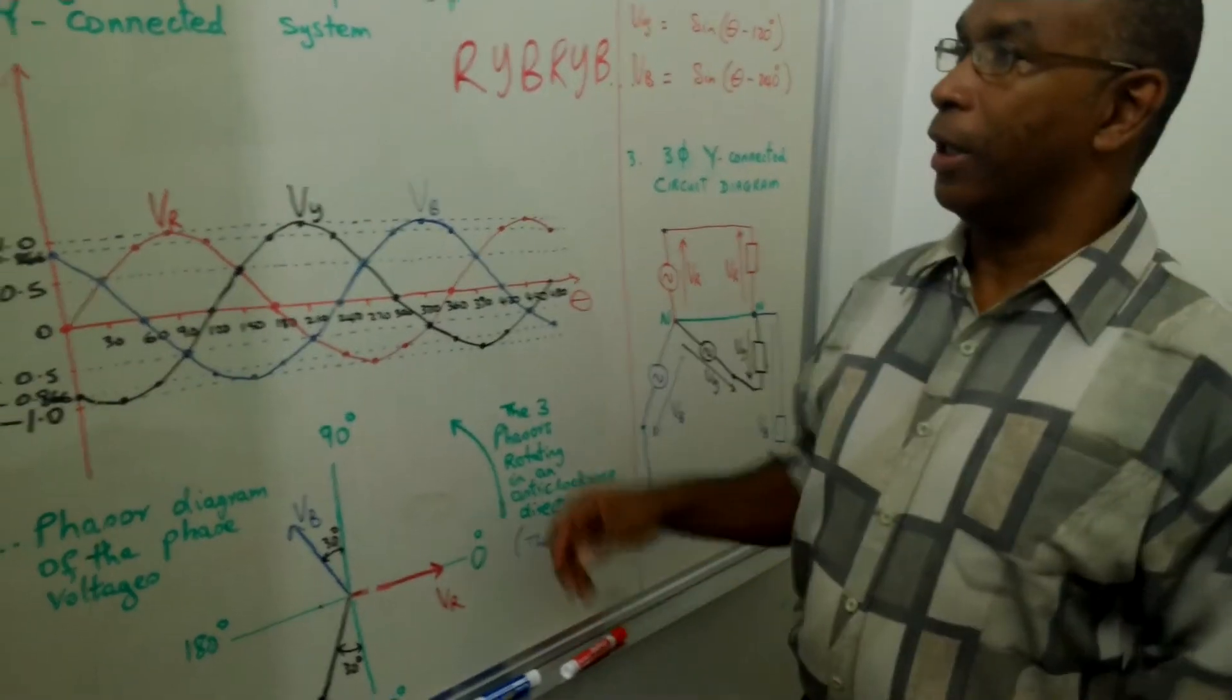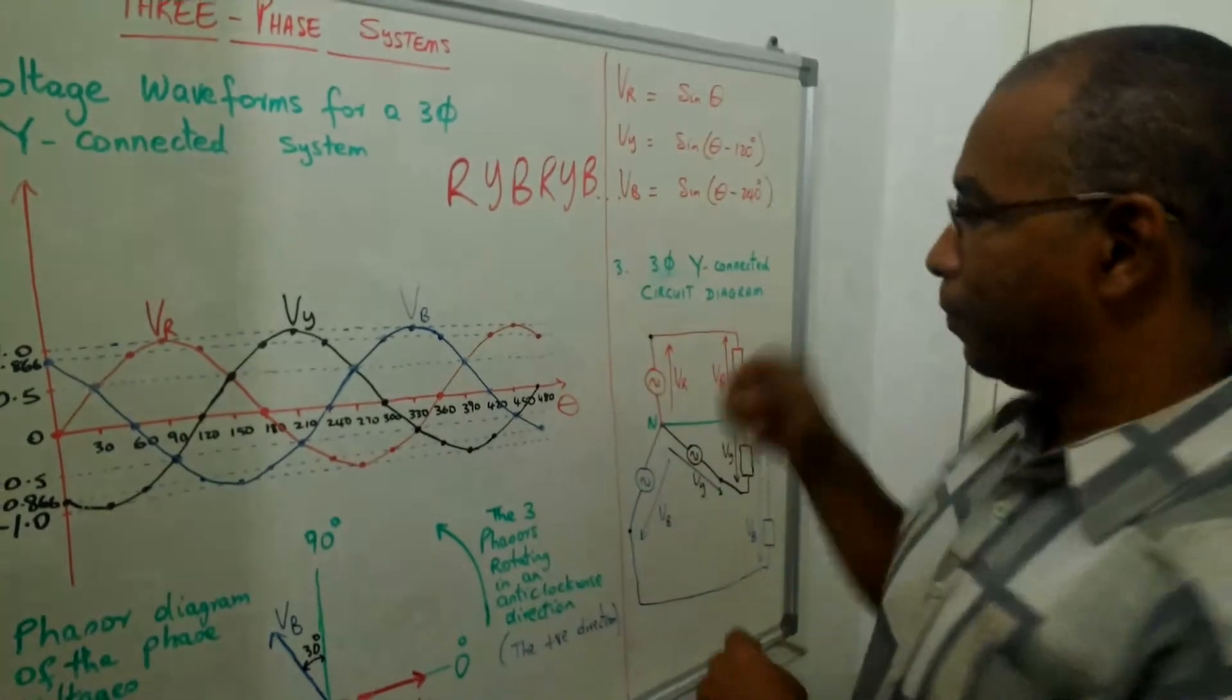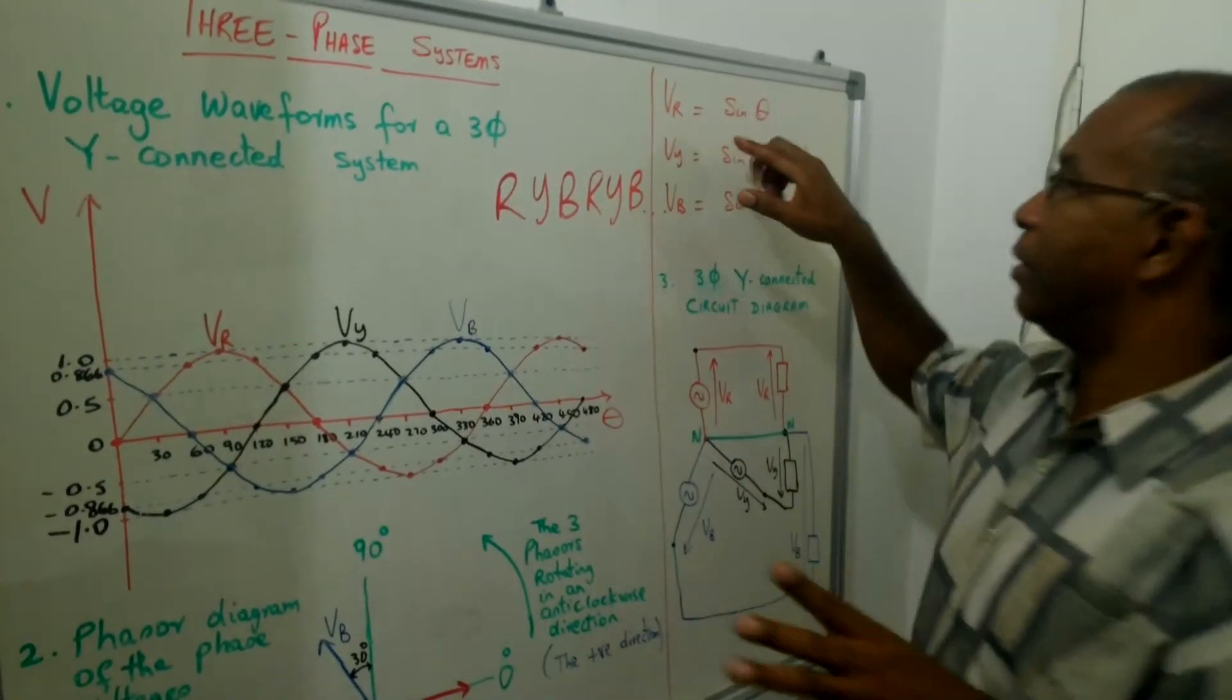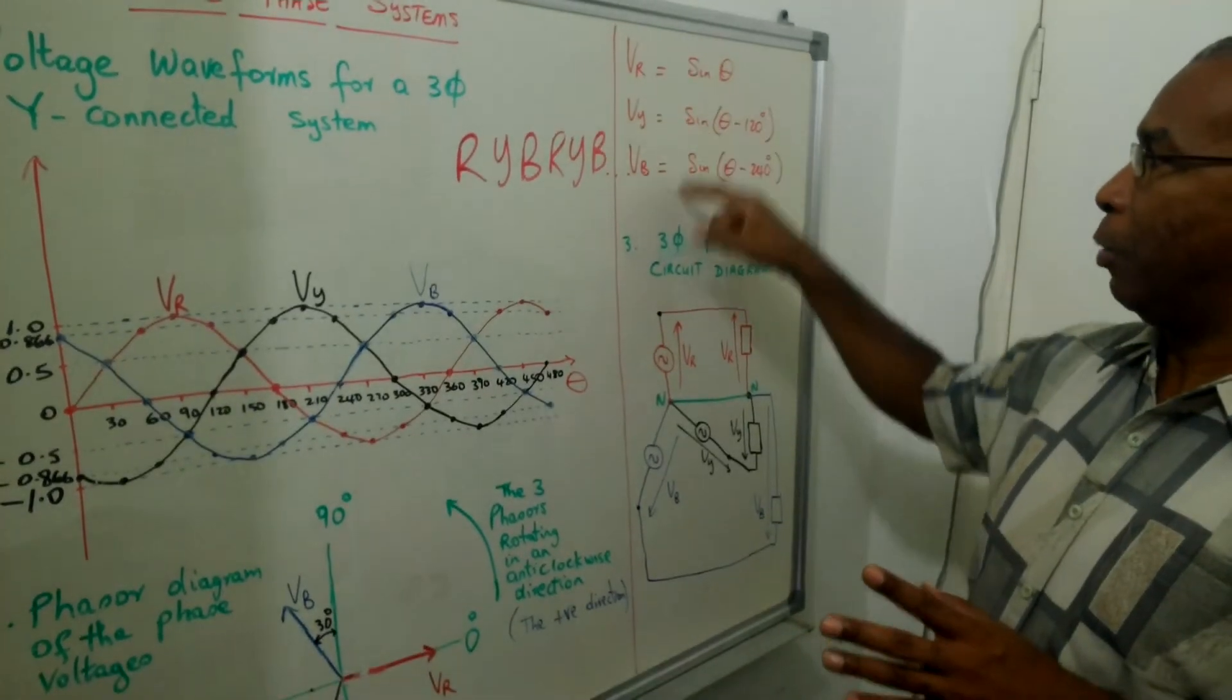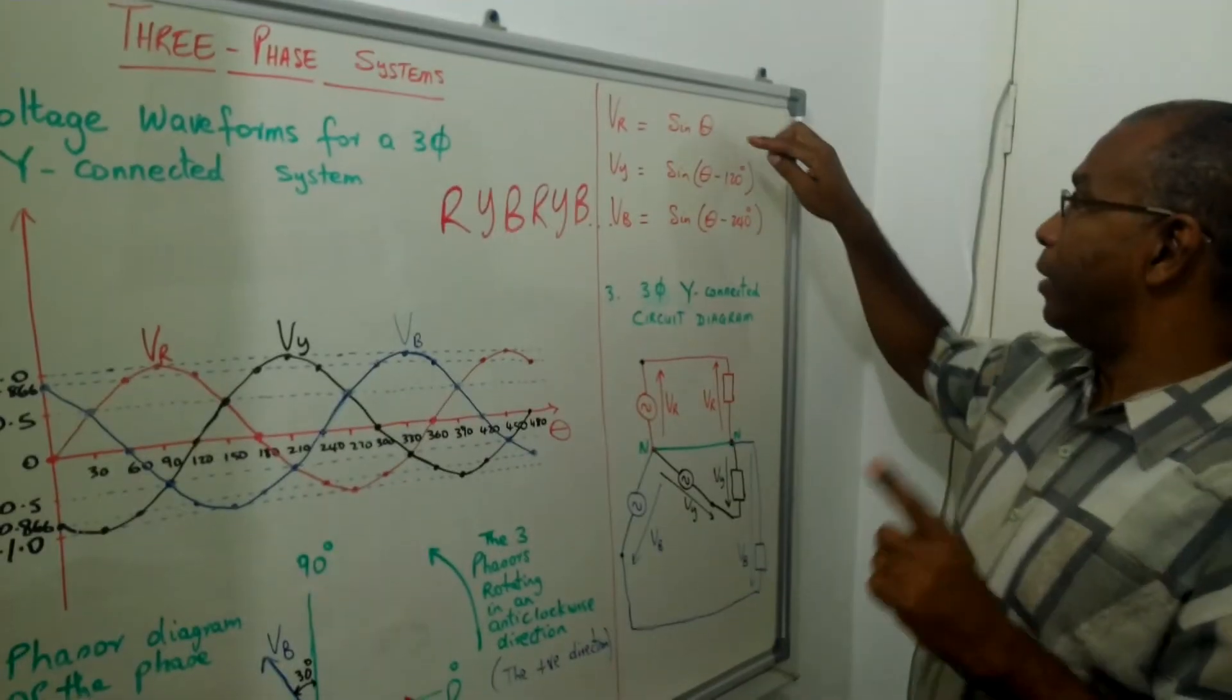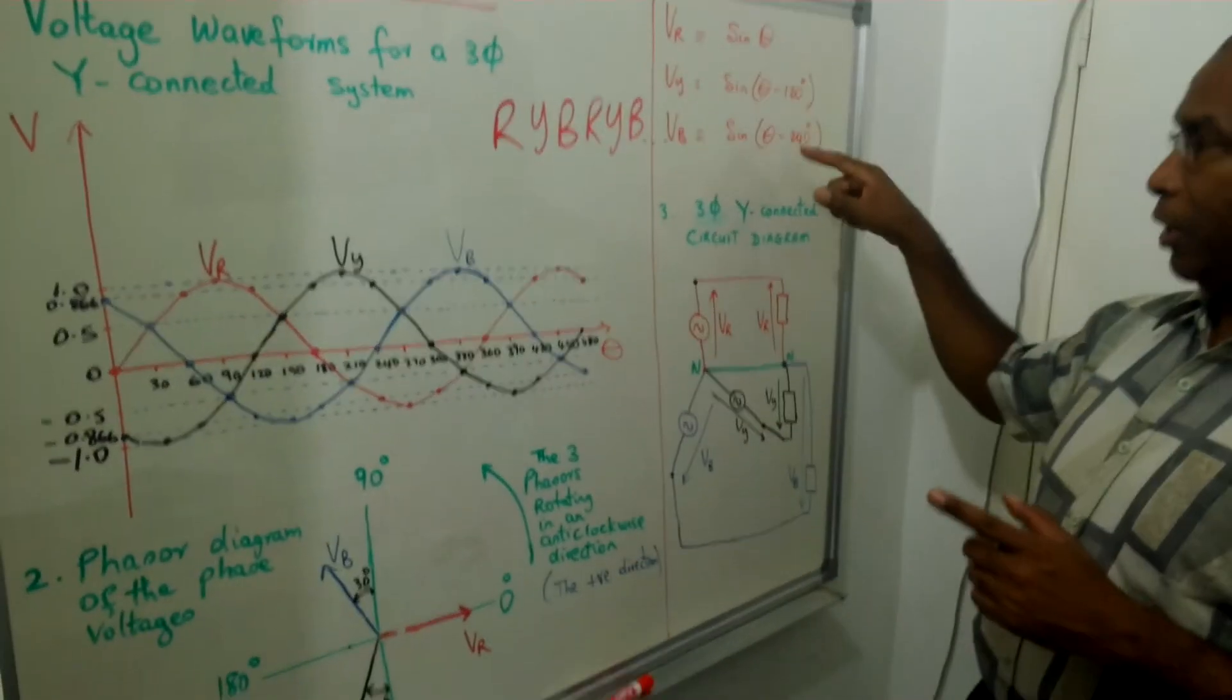So that in a nutshell is how you could represent the voltage waveforms of a three-phase system. Notice that this system would be called a balanced system. And a balanced three-phase system has the voltages having equal magnitude. Here all the magnitudes would be one. If you look at the diagram all the magnitudes are the same. And then the other criteria for a balanced three-phase system, another criteria is that the waveforms are 120 degrees apart.